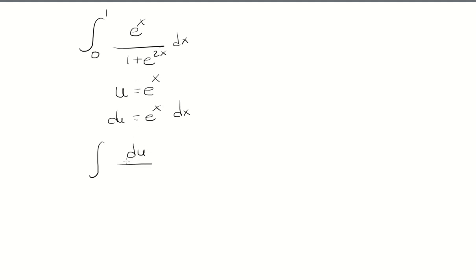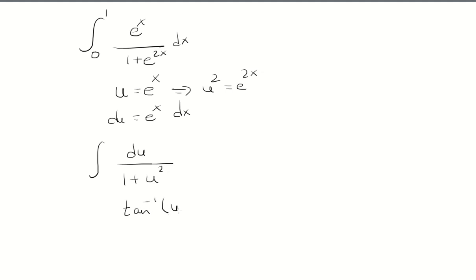For the denominator, we have 1 plus e to the 2x. If I square both sides, u squared equals e to the 2x, so e to the 2x is replaced with u squared, giving 1 plus u squared in the denominator. When I take the antiderivative, it's going to be the inverse tangent of u, where u is e to the x.